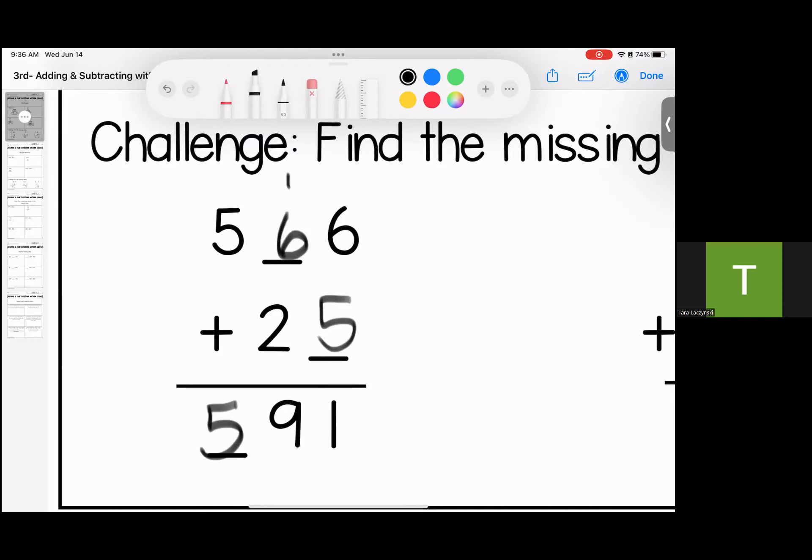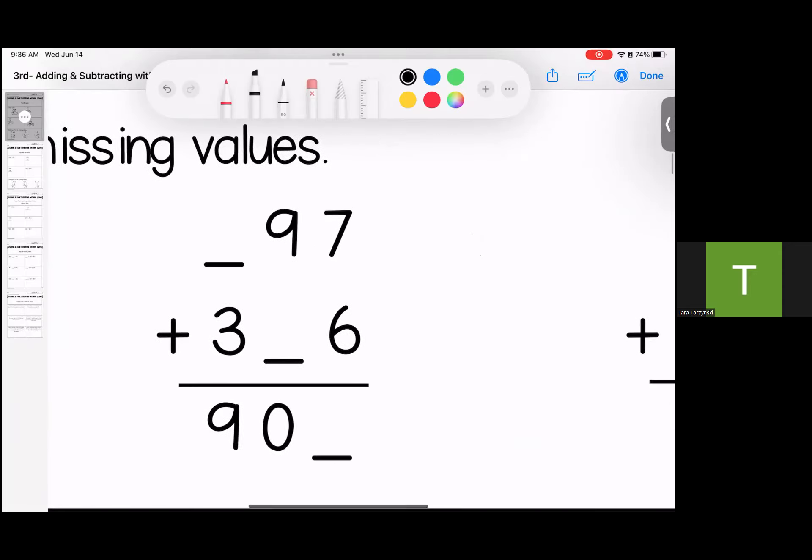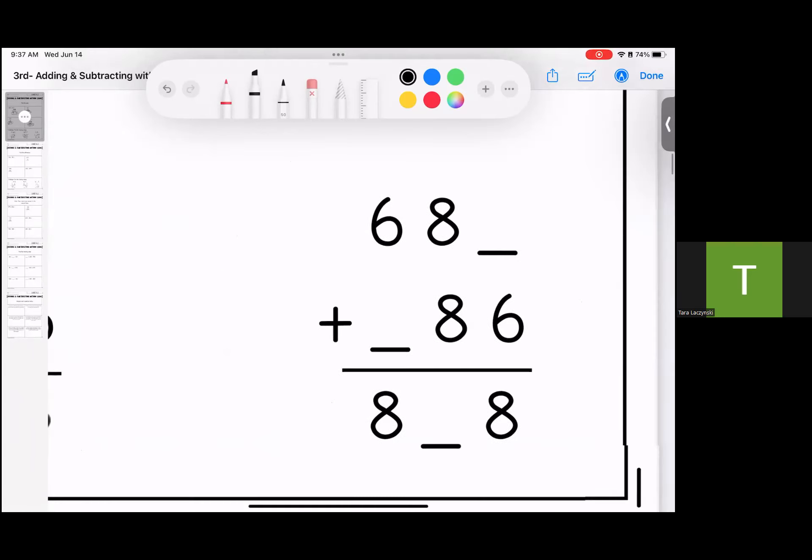So 566 plus 25 gives me 591. Same strategy over here. I need 9 plus a number to give me 0. So let's start with what I have. 7 and 6 is 13, I carry. 9 plus the carry already gives me that 0, so that means I need a 0 here. I need a number plus 3 to give me 9, it's going to be 6. So 697 plus 306 gives me 903.